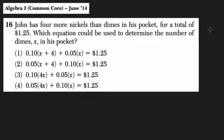John has four more nickels than dimes in his pocket. So he's got coins in his pocket and he's got nickels and dimes, and there's more nickels than dimes at any given time. That's important. Four more to be precise. Always four more. And the total is $1.25. Which equation could be used to determine the number of dimes x in his pocket?